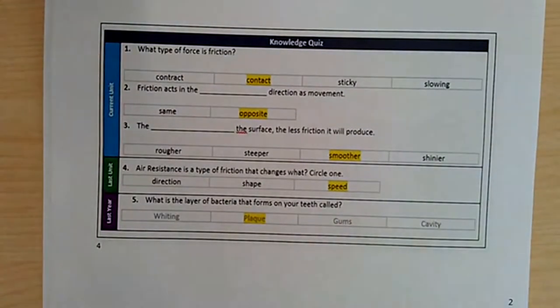Number one, what type of force is friction? It's a contact force. Number two, friction acts in the opposite direction as movement. Number three, the smoother the surface, the less friction it will produce.